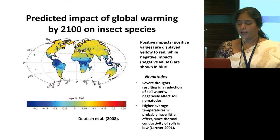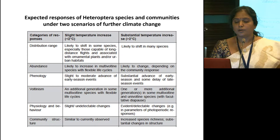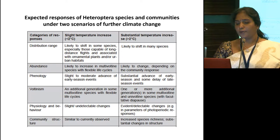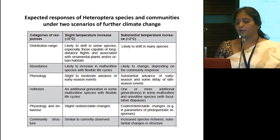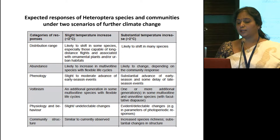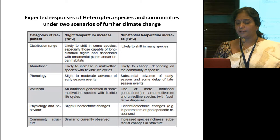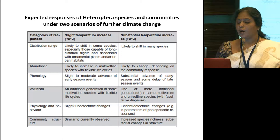High average temperature will probably have little effect on nematodes since thermal conductivity of soil is low. A slide shows the expected response of Heteroptera species communities under two future climate scenarios: a slight increase of less than 2 degrees Celsius in the near future, and a subsequent increase of more than 2 degrees Celsius after 2050. Distribution range will likely shift in some species, especially those capable of long-distance flight. Abundance is likely to increase in multivoltine species with flexible life cycles. Phenology shows slight or moderate advance of early season, and additional generations are expected in multi-voltine species.